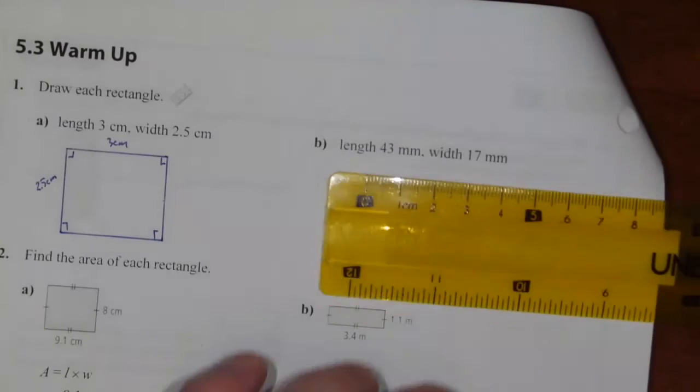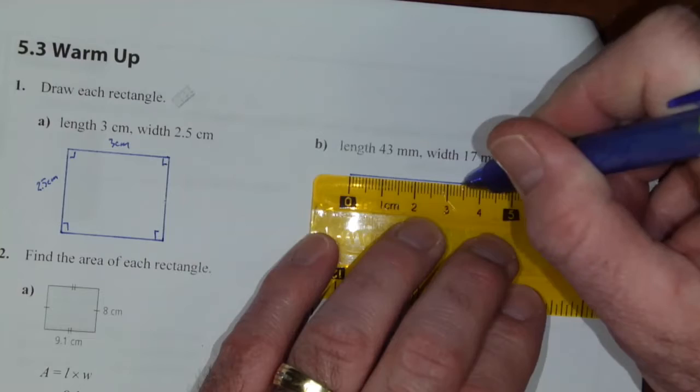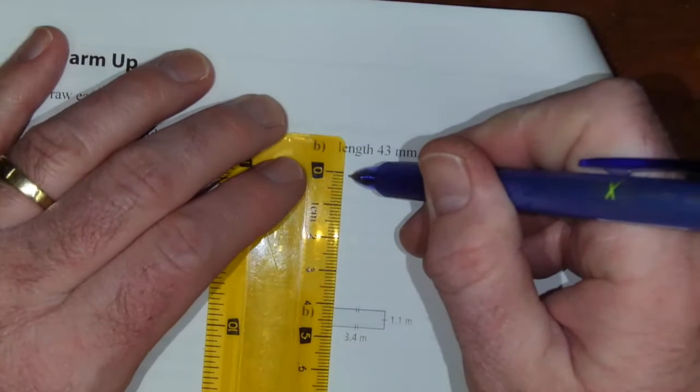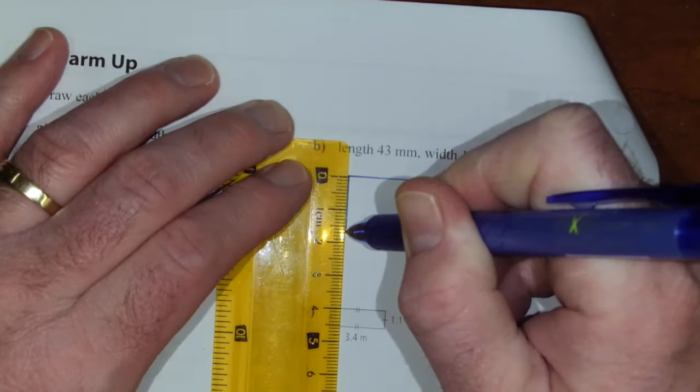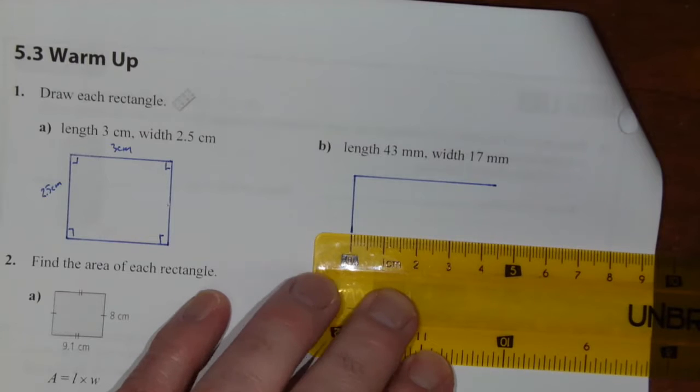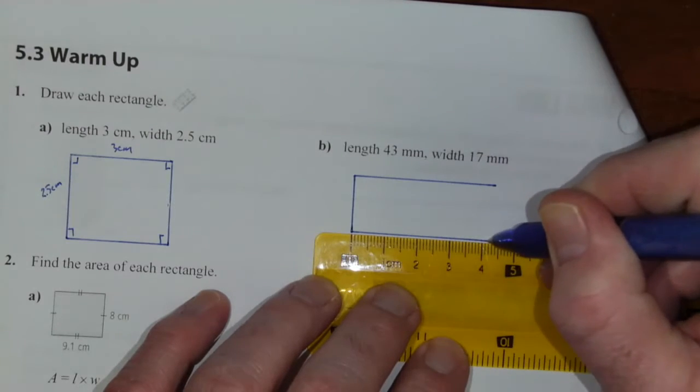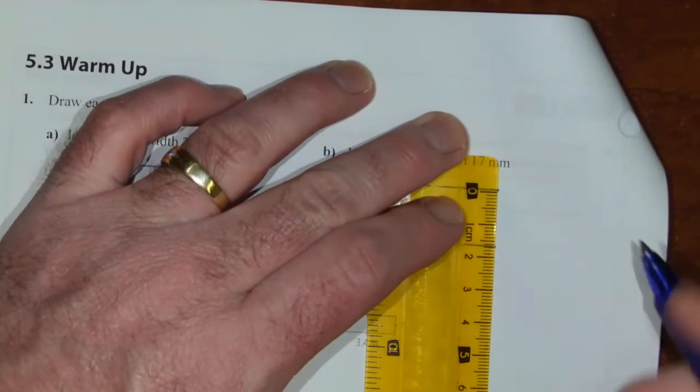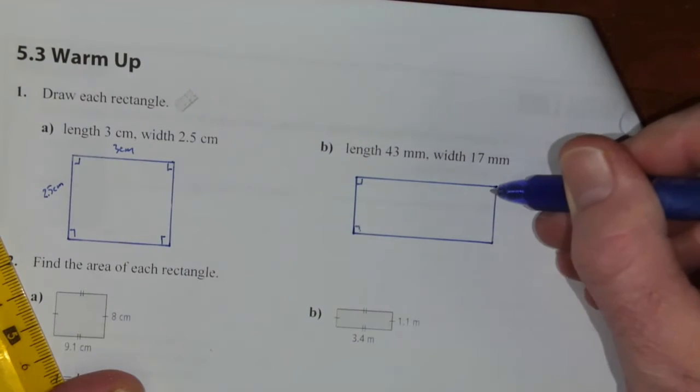Next one, length of 43 millimeters so that's 4.3 centimeters. And then a width of 17 millimeters so that's 1.7 centimeters. So 17 millimeters about right there. Another 43, trying to make that as parallel to the top line as I can. And then 17 here. And again these are 90 degree angles.